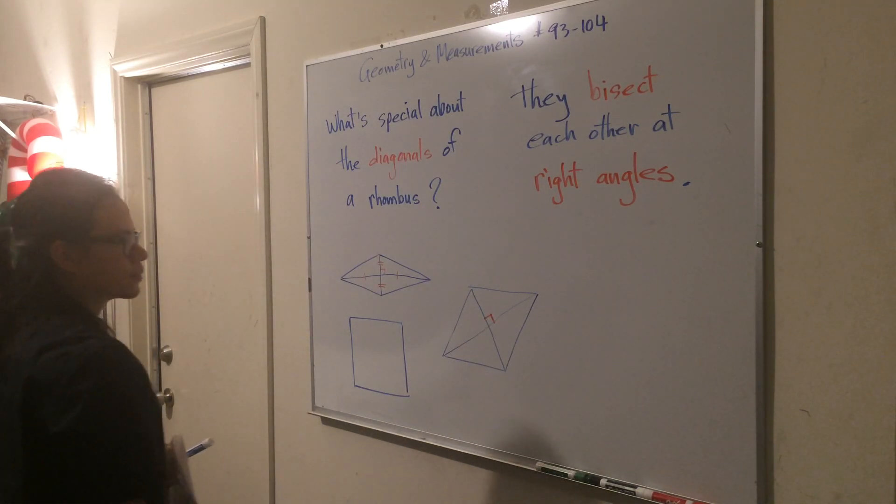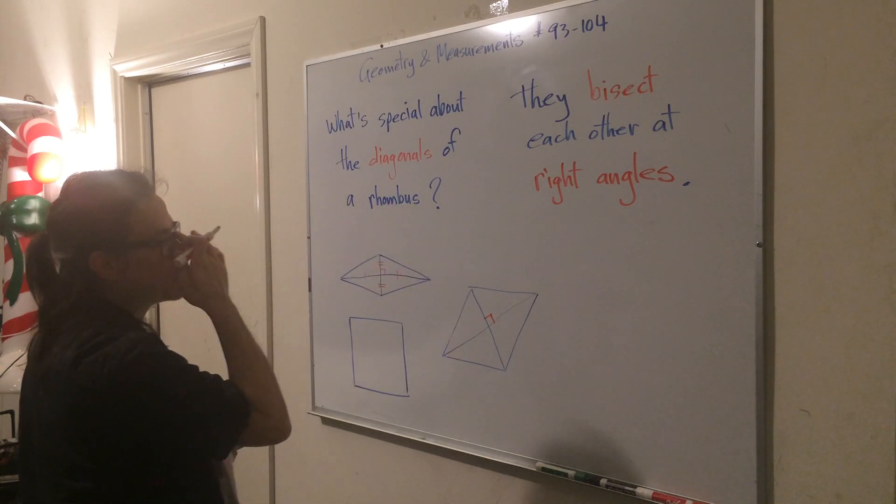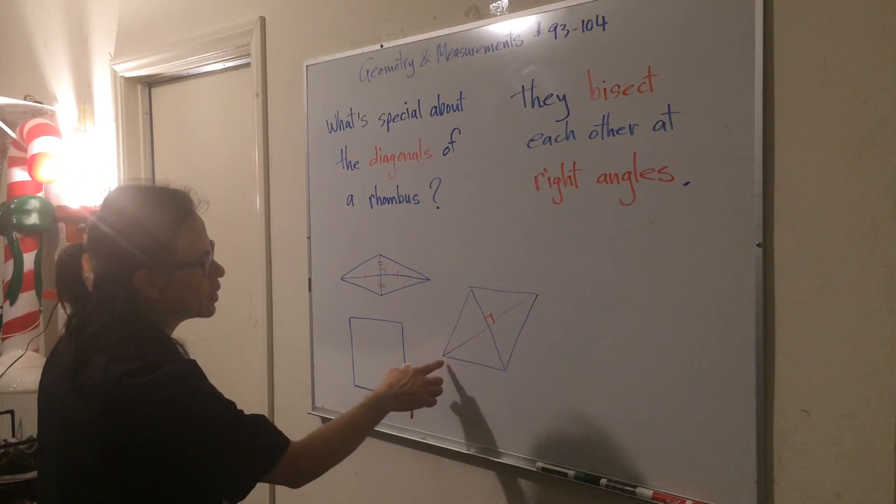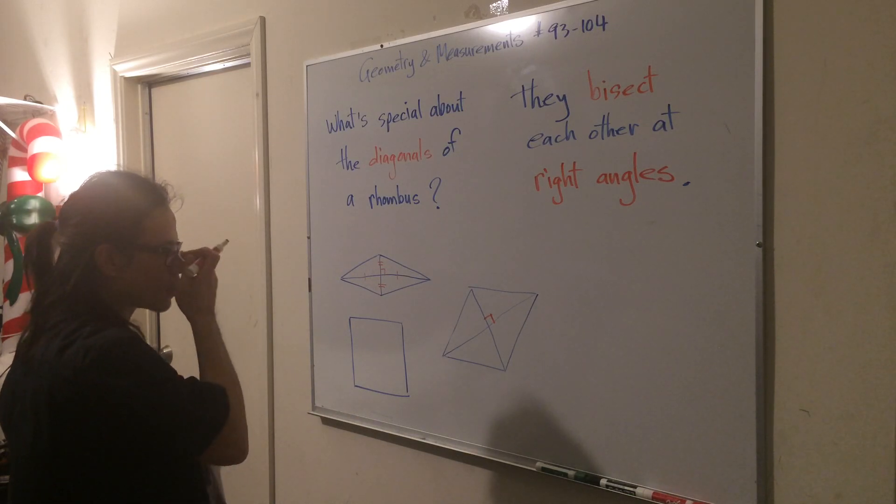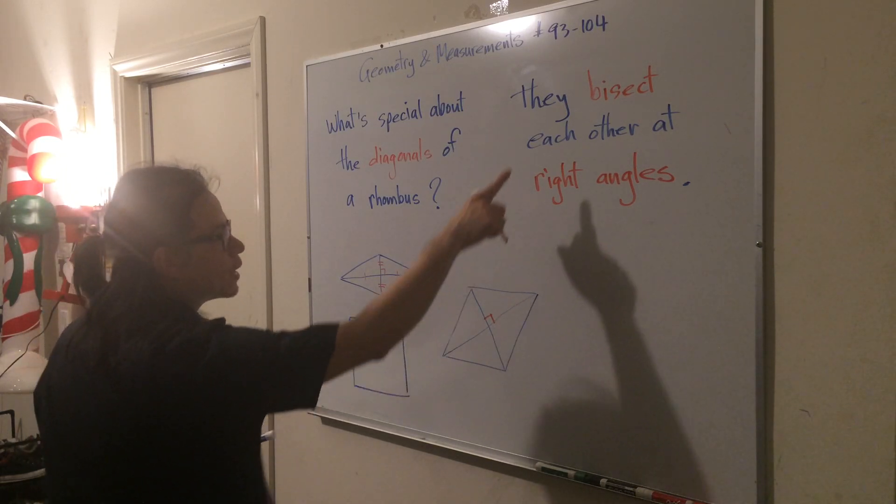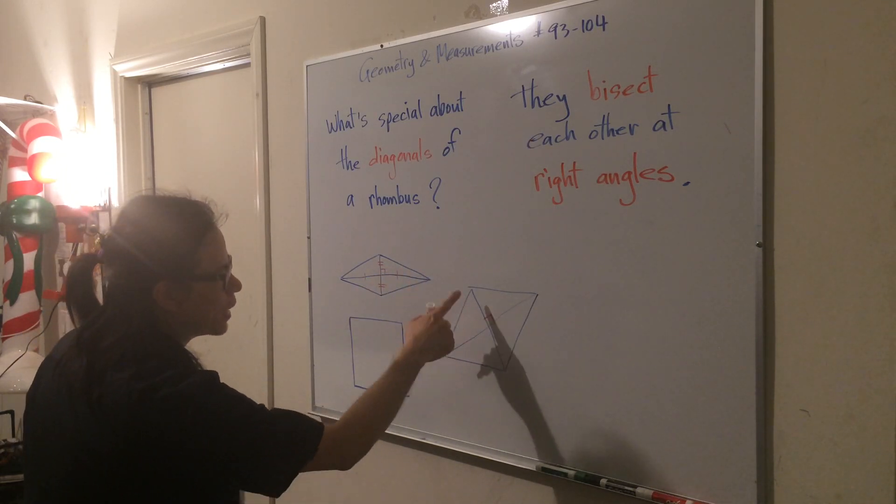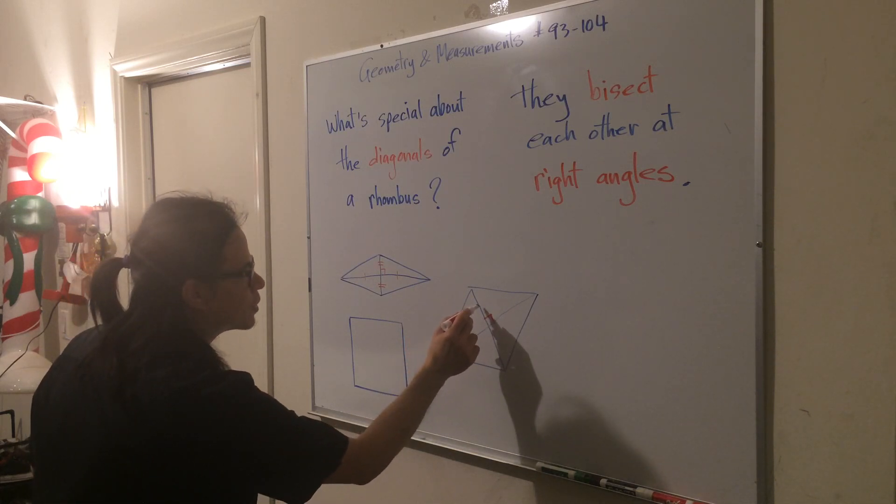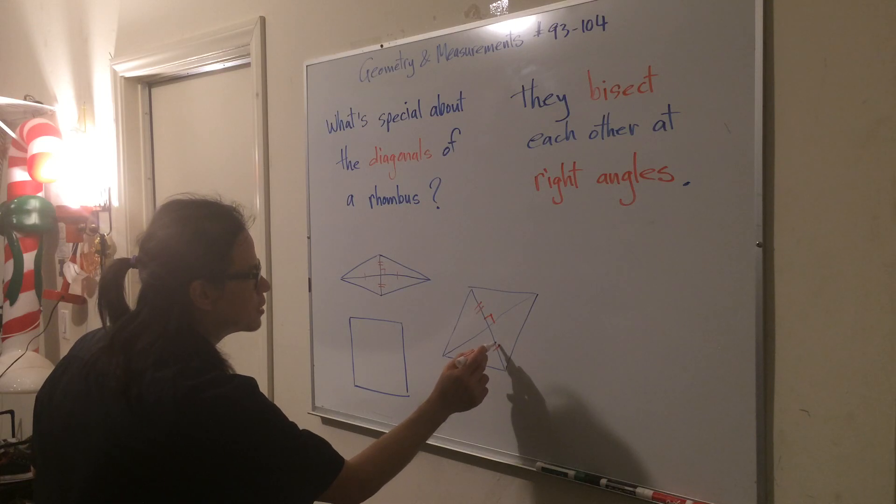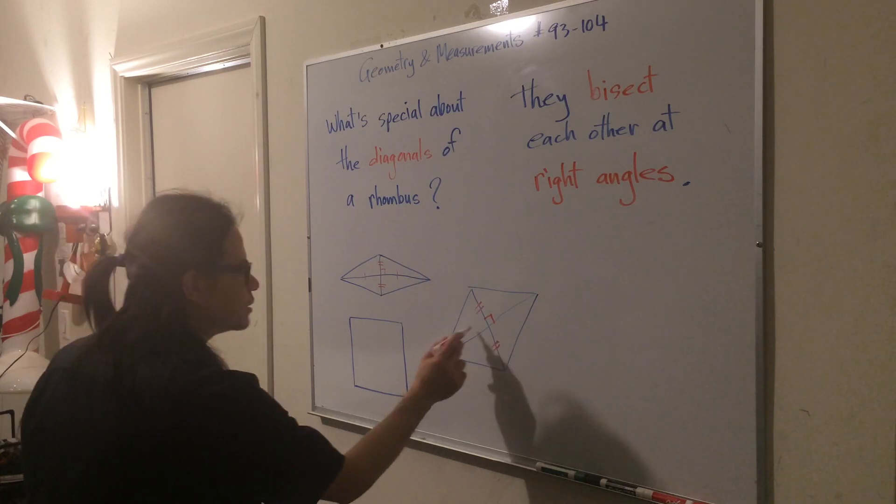So that's what we mean by bisecting each other at right angles. It also divides the two diagonals in half, so this will be the same as this. This length here will be the same as this length here.